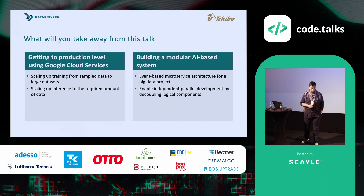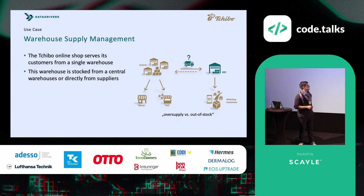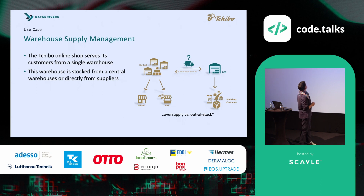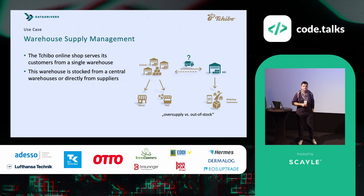A brief insight into the use case: the Shibo customer is supplied from one single warehouse for the webshop customers, and this single warehouse is fed from a central warehouse. That central warehouse also distributes goods to the brick-and-mortar stores and to the point of sales and retailers — a classical optimization problem.